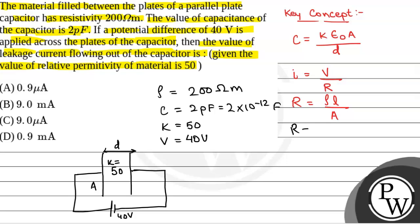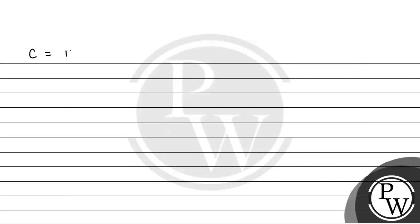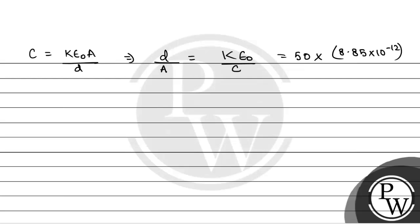R will be equal to ρ·L/A, since L — that is length of the resistance — will be the length of capacitor plate D, and A is the surface area of the capacitor plate. Also, C is equal to K·ε₀·A divided by D. So we will have D divided by A is equal to K·ε₀ divided by C. Now K is 50, ε₀ is 8.85 into 10 to the power minus 12, divided by C which is 2 into 10 to the power minus 12. On solving this, D divided by A is equal to 221.25 per meter.